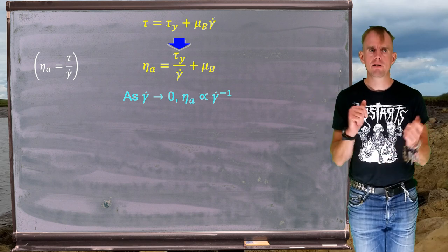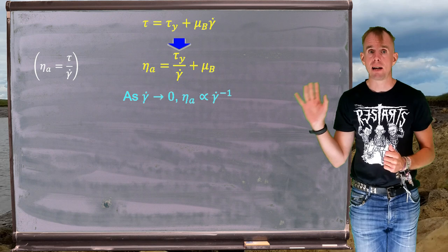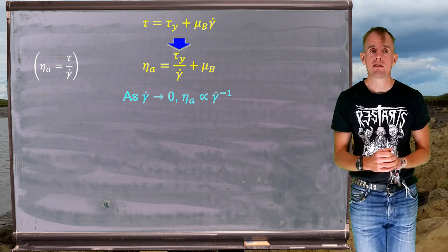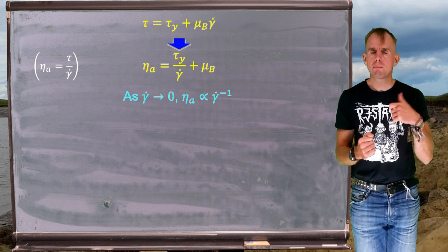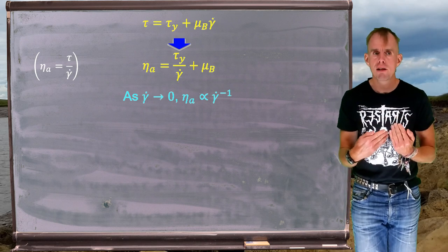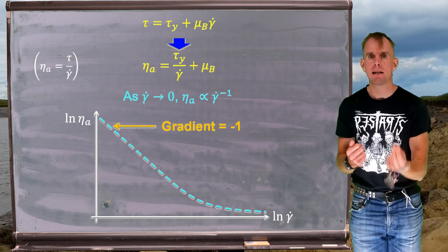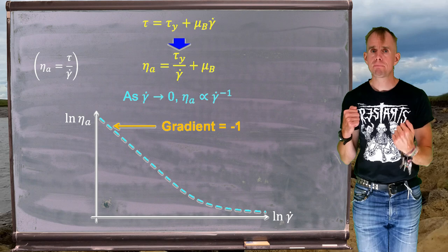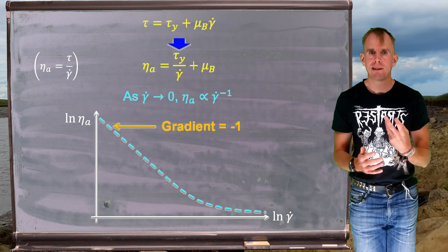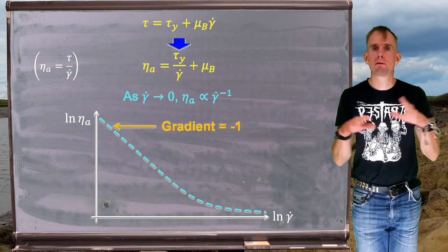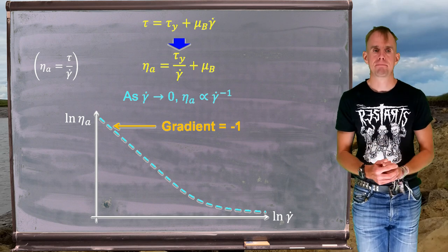And hopefully you can see that as gamma dot tends to zero, two things happen. As gamma dot tends to zero, the first term on the right hand side dominates eta a. And when it dominates eta a, we can say that eta a is proportional to gamma dot to the minus one. And so if we look at apparent viscosity as a function of shear rate in the low shear rate region, we see something very useful. And you should remember this as a cue to think, am I dealing with viscoplastic behavior? A graph of log eta a versus log gamma dot will have a gradient of minus one at low shear rate if the fluid is behaving in a viscoplastic manner. And so this can be your first clue from rheometric data that you need to model your material in a viscoplastic manner.